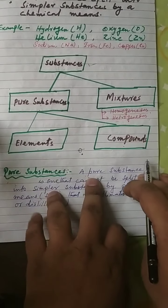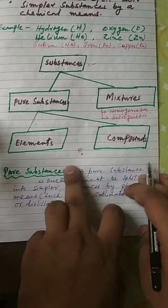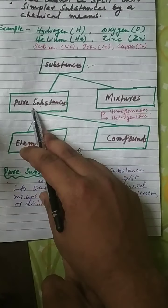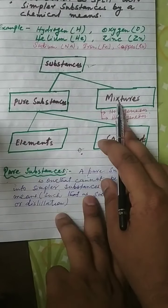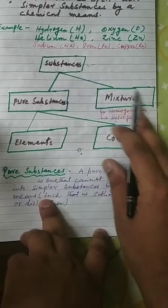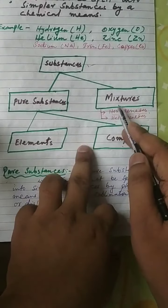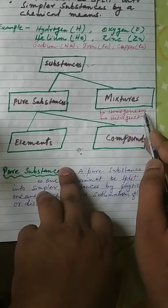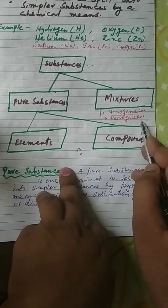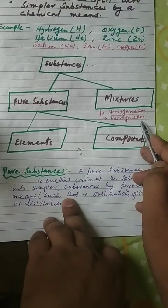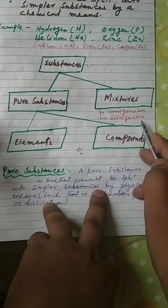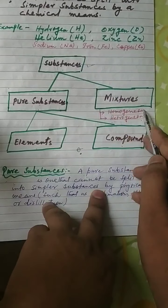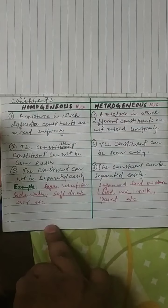Assalamu alaikum warahmatullahi wabarakatuh. Look at this substance. Substances have two parts: pure substance and impure substance, that is a mixture. Mixture is further divided into homogeneous mixture and heterogeneous mixture. In this video we will discuss about homogeneous and heterogeneous mixtures.